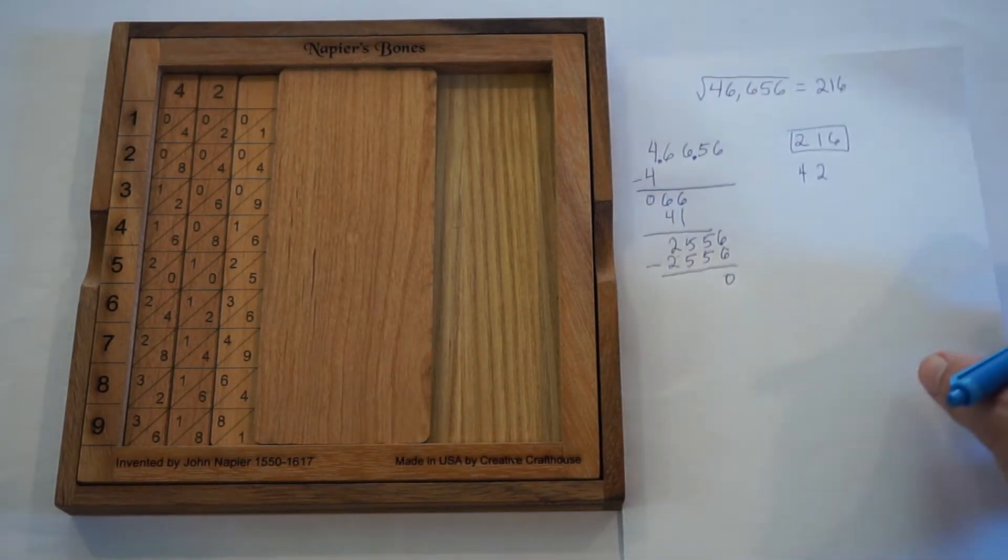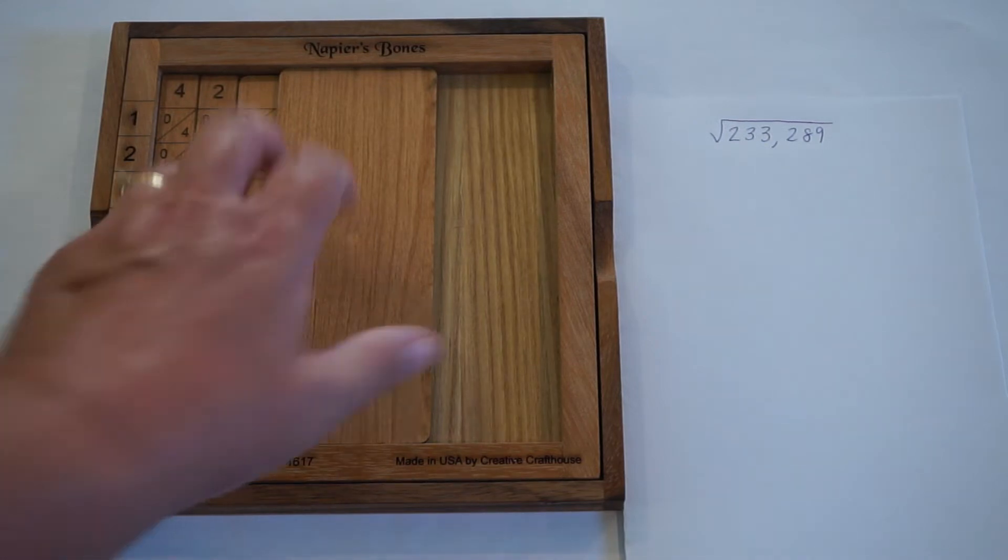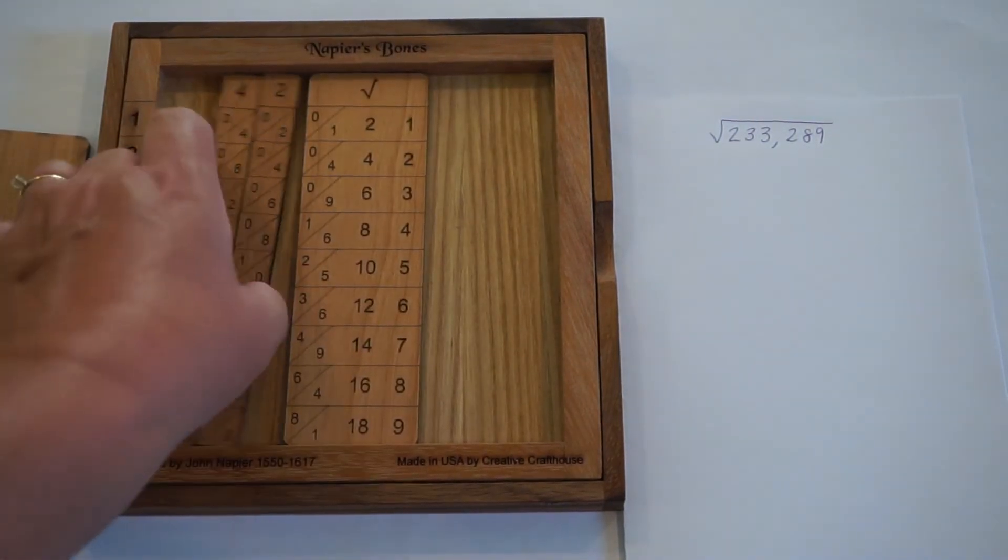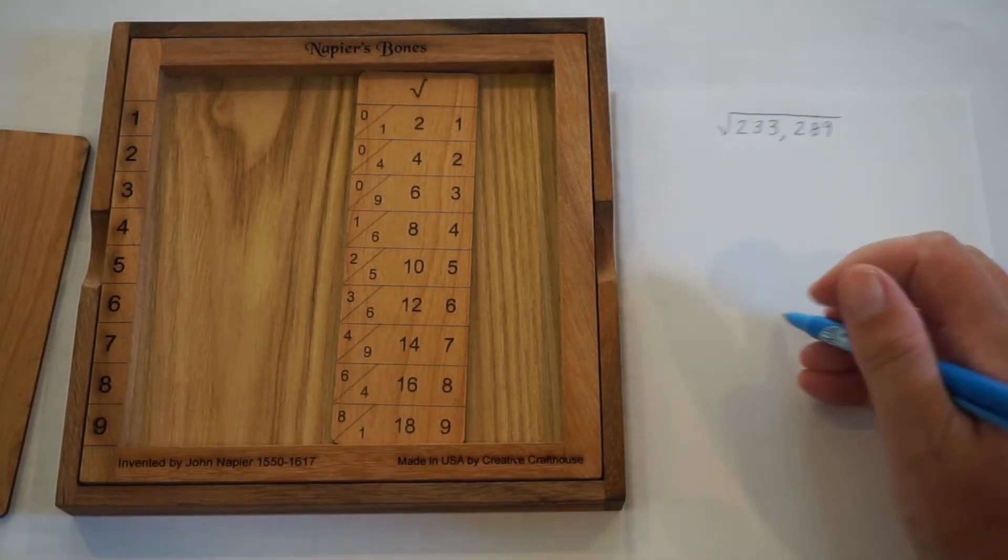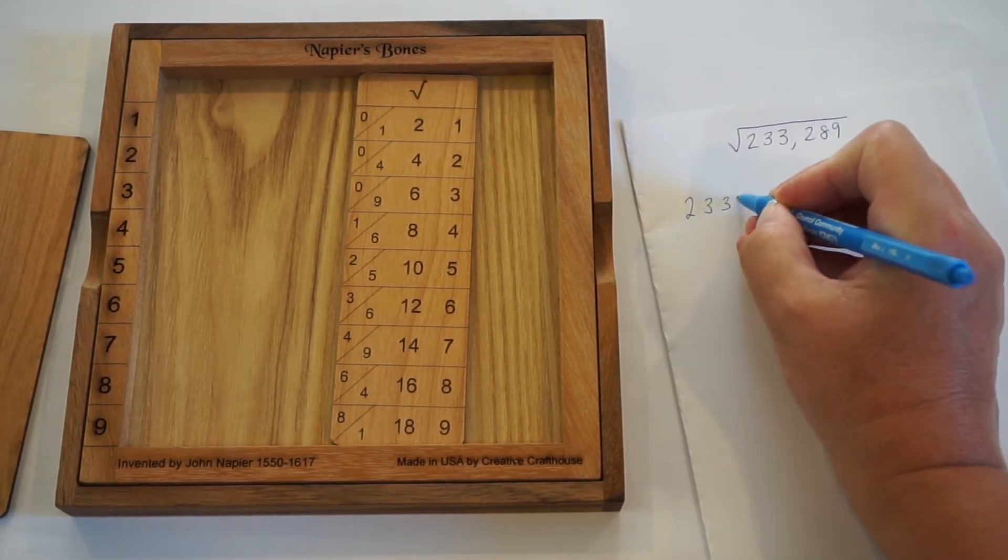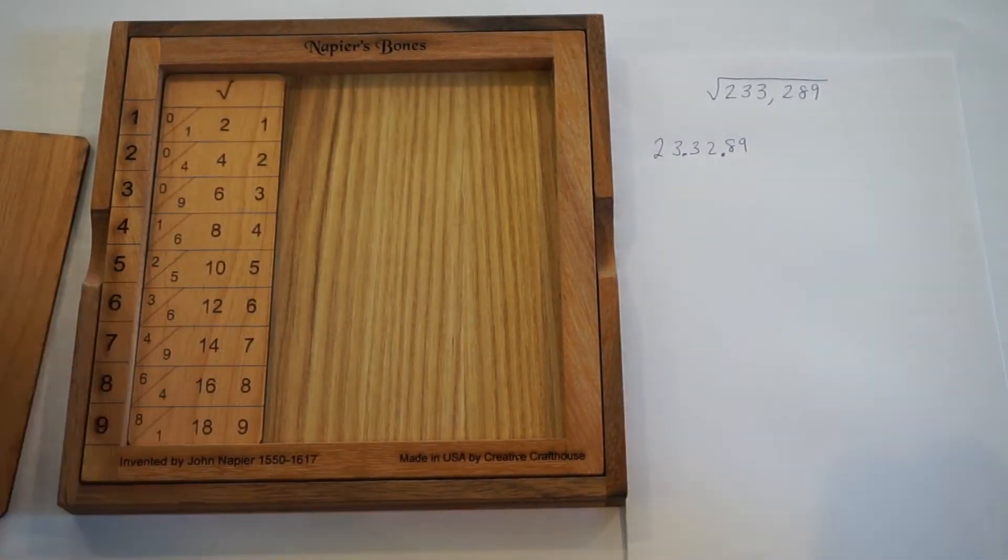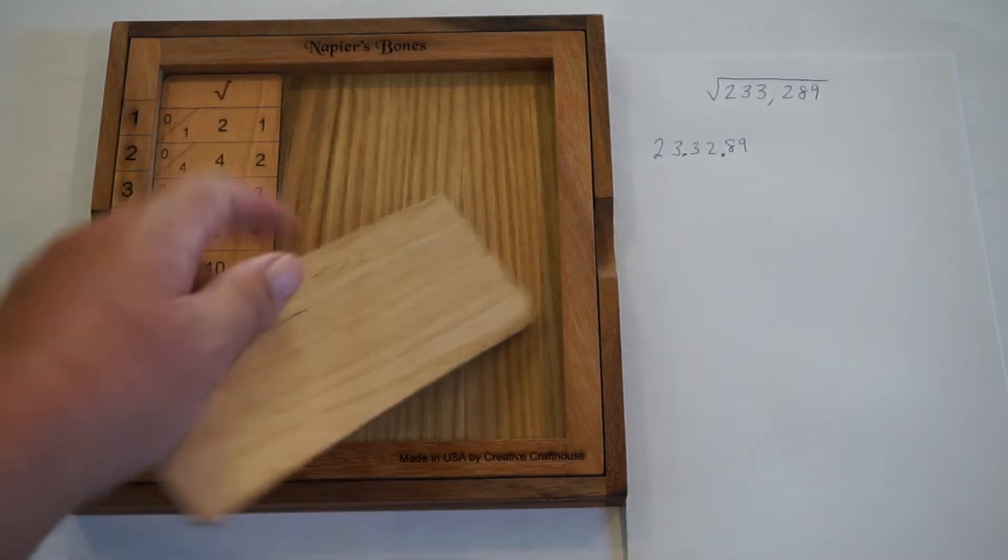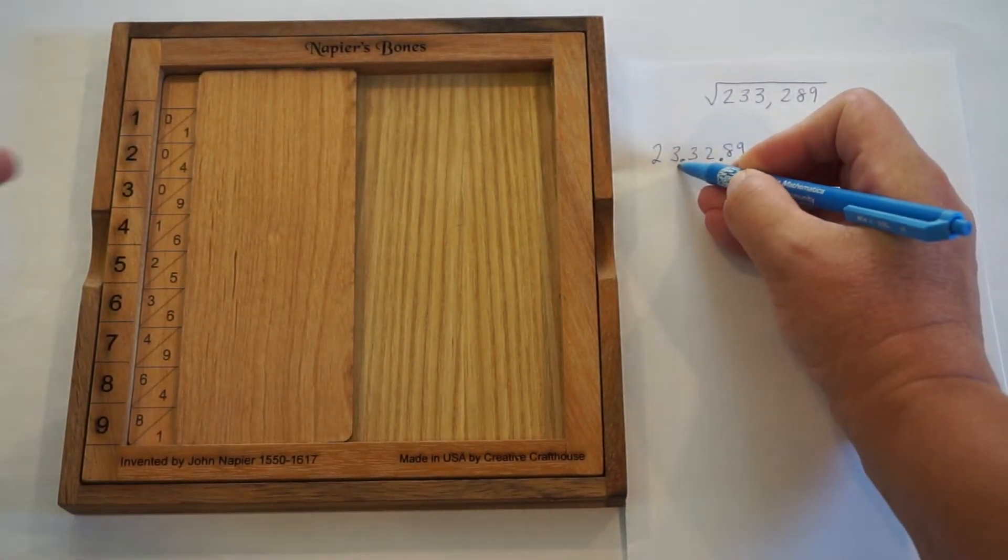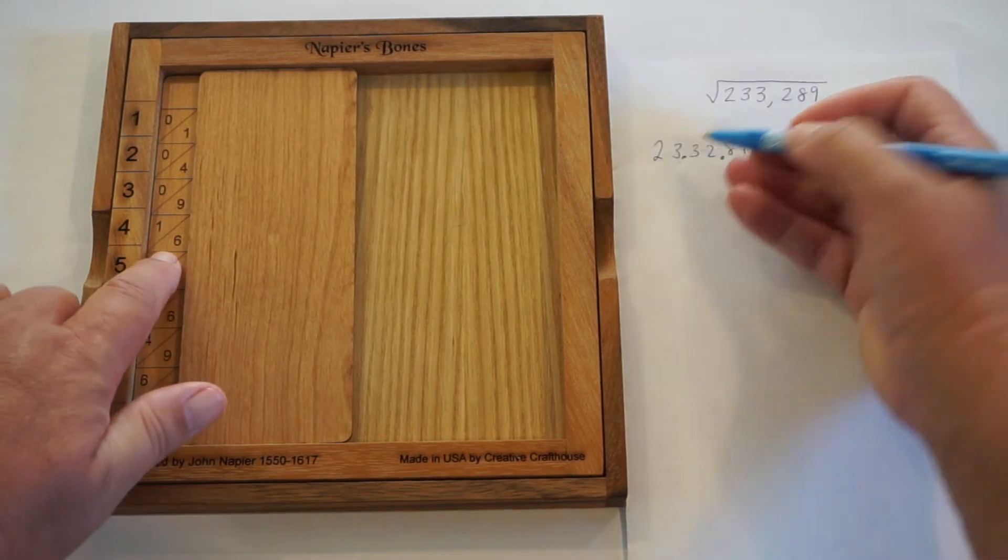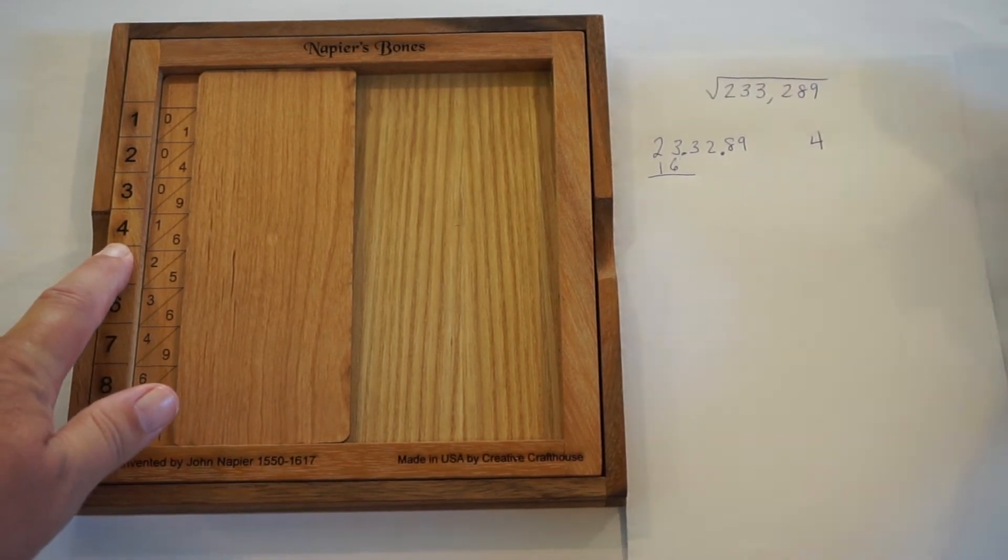So we're going to do two more problems. This next one has a little bit of a twist to it. We have 233,289. I will reset the frame. We again write our number, splitting it up into doublets starting from the back. We start with just the square root rod, which has the perfect squares in the first column. I look for a perfect square closest to 23 without going over, where 25 is too big. So we'll use 16, which is 4 squared. So 4 is the first part of my answer.